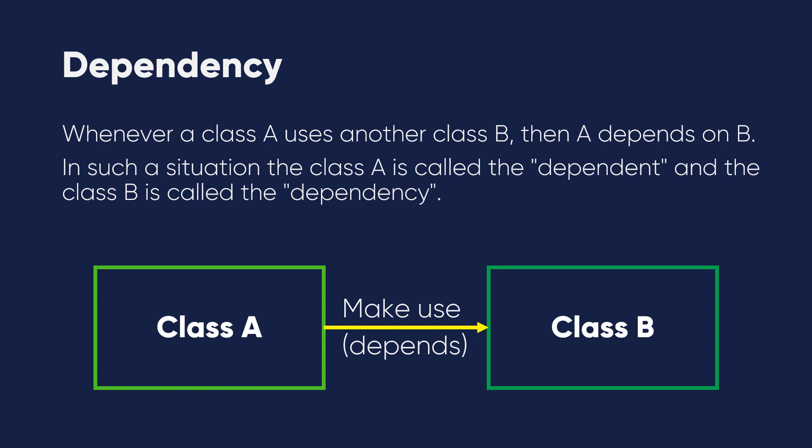So what does a dependency mean? Whenever a class A uses another class B, then A depends on B. In such a situation, class A is called the dependent and class B is called the dependency.